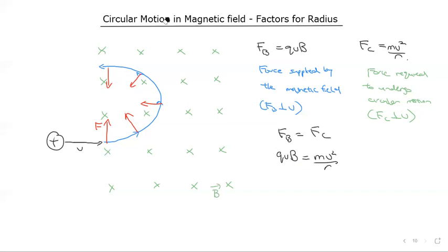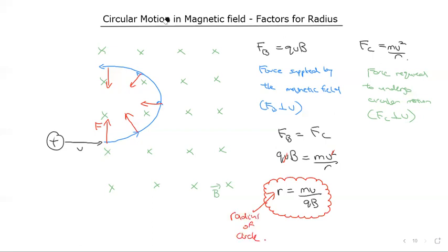You can see that one v cancels on both sides, and then we can solve for r. So over here we have an expression that we've derived for the radius of the circle. For a charged particle entering a magnetic field, it will undergo a circle due to the magnetic force, and we can actually work out the radius of this circle.